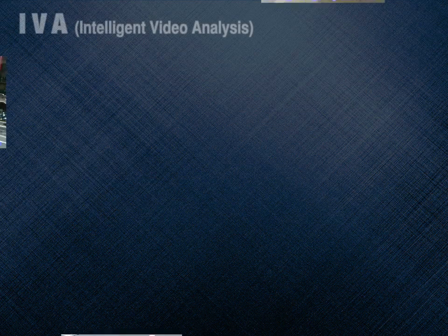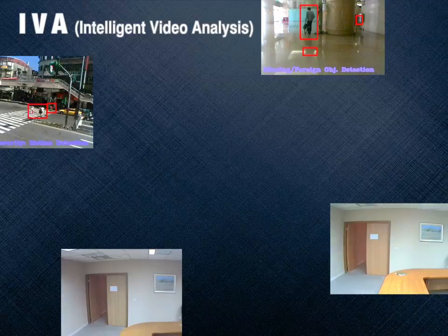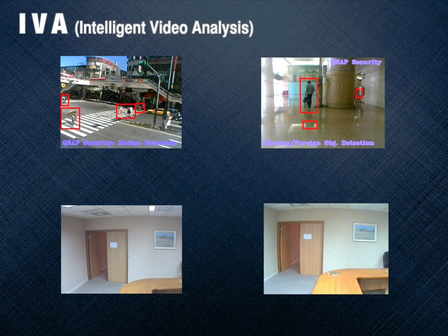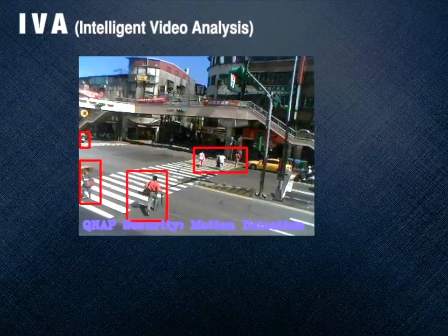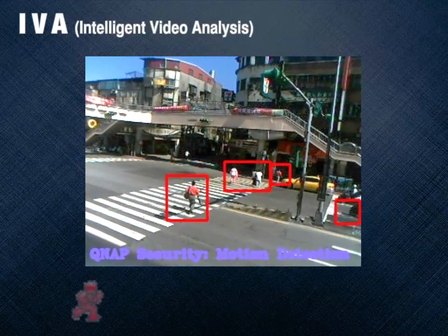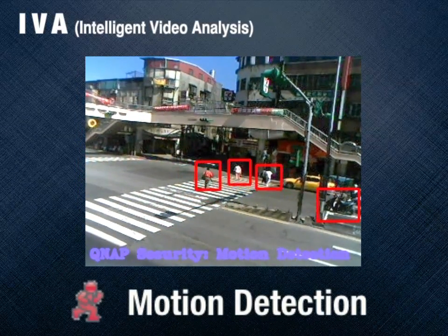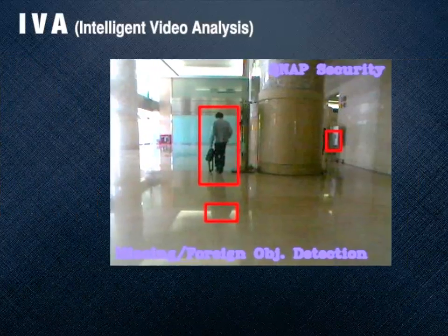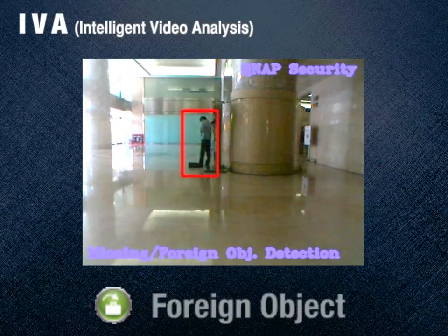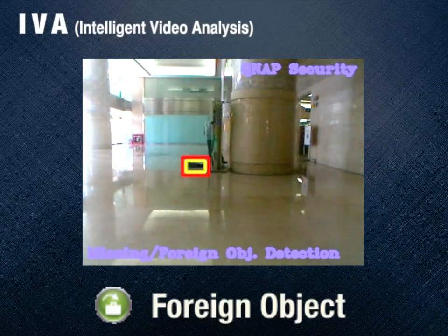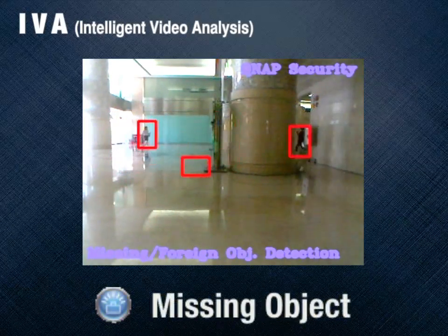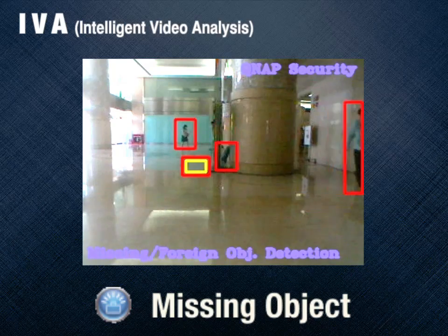QNAP NVR supports intelligent video analytics to allow users to search video files efficiently, largely reducing the time and effort required. It can detect movement in video, highlighting moving objects in red brackets; detect new foreign objects, highlighted in yellow brackets; and detect missing objects, with the missing area highlighted in yellow brackets.